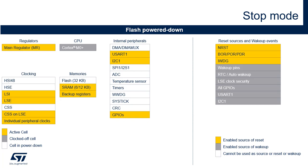I2C1 and USART1 and 2 can switch the HSI48 on during stop mode in order to recognize their wake-up condition, and switch off the HSI48 after receiving the frame if it's not a wake-up frame. In this case, the HSI48 clock is propagated only to the peripheral requesting it. The stop mode consumption typical at 3V is 80 µA when HSI is disabled, and 605 µA when HSI48 is enabled.